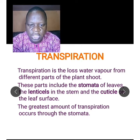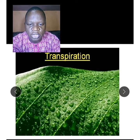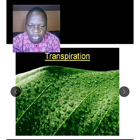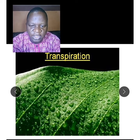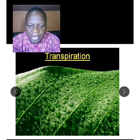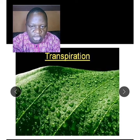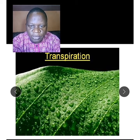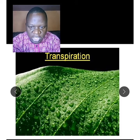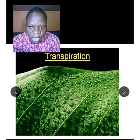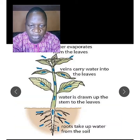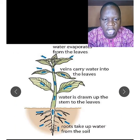Here is an example showing transpiration. You can see a picture of a leaf with a droplet of water on its surface. That droplet of water indicates that transpiration has taken place — meaning water has been lost by the leaf through the stomata.